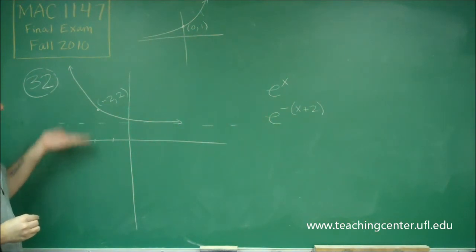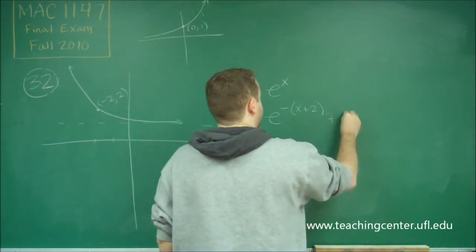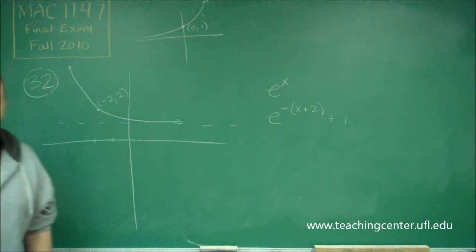Finally, we have a vertical shift of 1 up. So we just tack on a plus 1 at the end. That gives us a vertical shift.